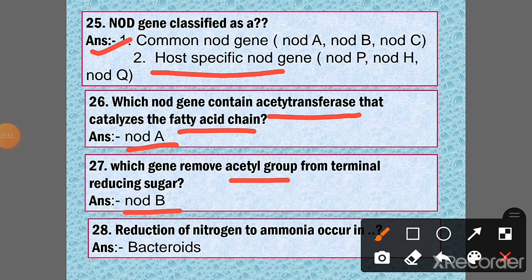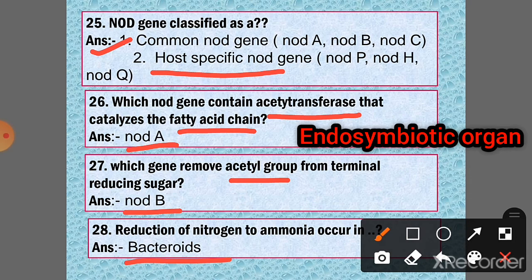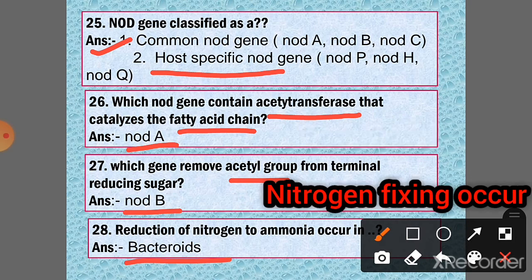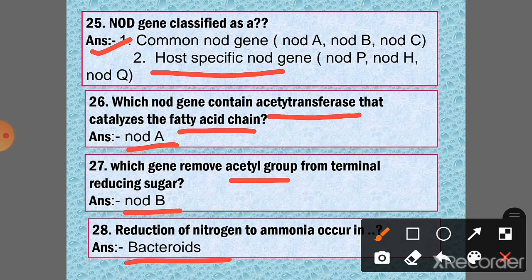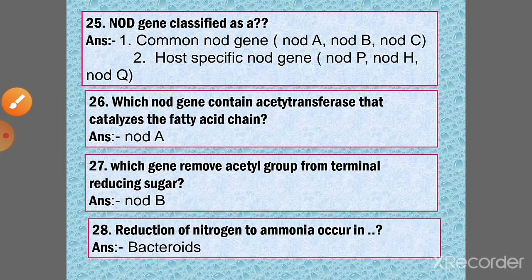Question 28: Reduction of nitrogen to ammonia occurs in bacteroids. Bacteroids is an endosymbiotic organelle in which nitrogen fixation process occurs. Bacteroids are formed when bacteria stop dividing and begin to enlarge and differentiate.